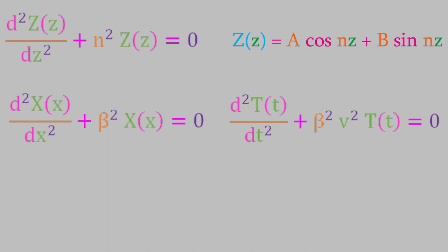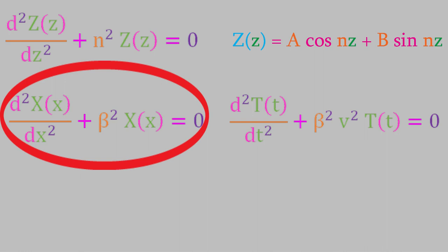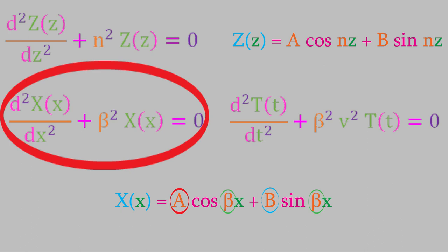Looking at the equation involving x first, comparing it to the generic solved differential equation, the solution to our equation will be X equals A·cosine(βx) plus B·sine(βx). We now have a solution to that differential equation — it no longer contains any differentials. The only problem is that it contains three constants, A, B, and beta, whose values we don't know yet, but we'll be able to take care of that next.